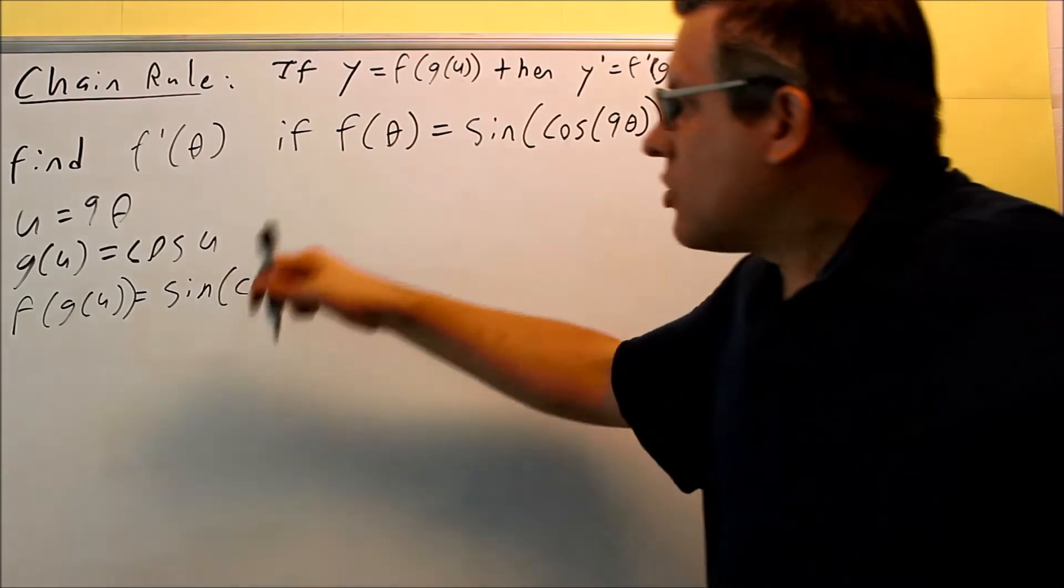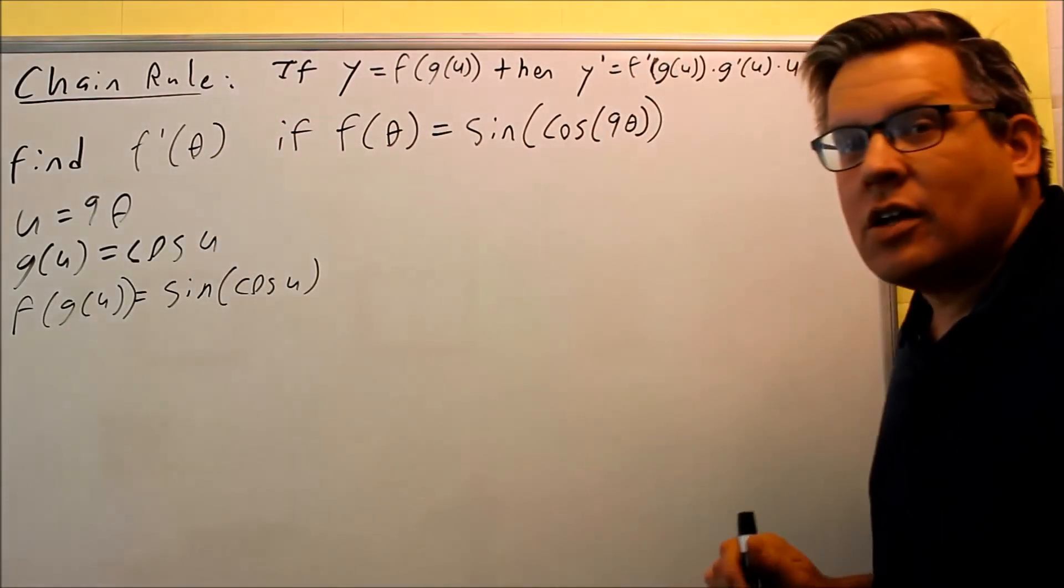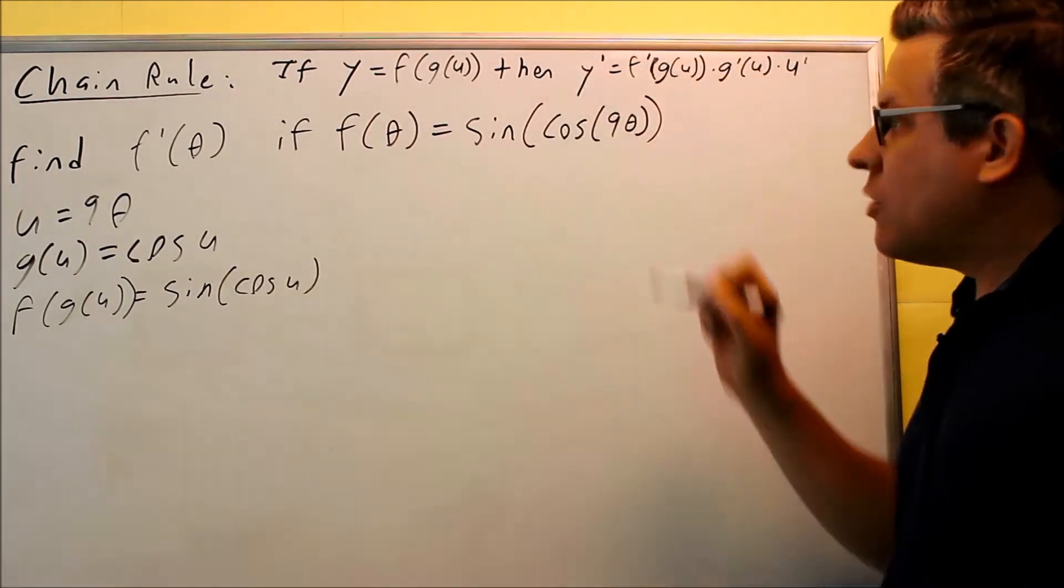So I have that. So I have the innermost function, I have the middle one, I have the outside one, and I have all three identified. So now that we have these identified, we're ready to apply the chain rule formula.